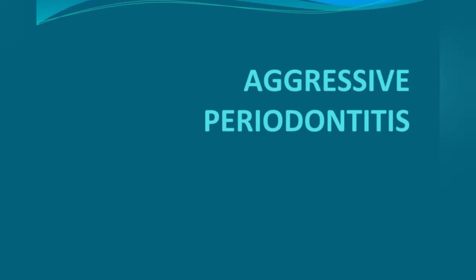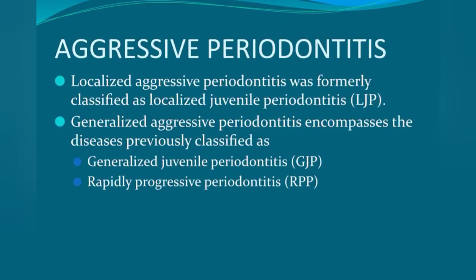I'm Dr. Moansi. Today I'll discuss a very important topic in periodontics: aggressive periodontitis. As the name suggests, 'aggressive' means the rate of destruction of the periodontium is rapid. This type of periodontitis is seen in patients less than 30 years of age. There are some salient features that make it different from other types like chronic periodontitis.